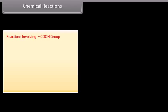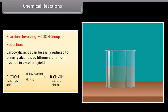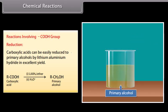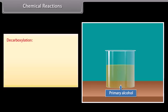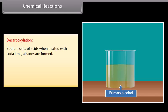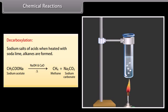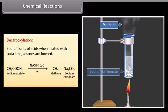Reactions involving the carboxyl group. Reduction: carboxylic acids can be easily reduced to primary alcohols by lithium aluminium hydride in excellent yield. Decarboxylation: sodium salts of acids when heated with soda lime form alkanes. When sodium acetate is heated with sodium hydroxide and calcium oxide, it forms methane and sodium carbonate.